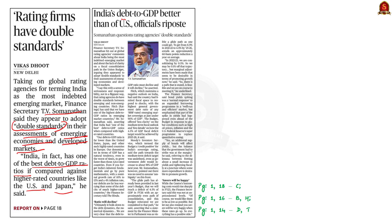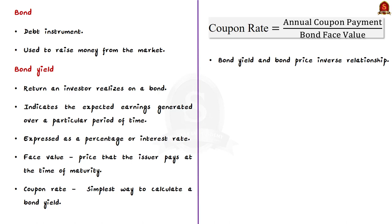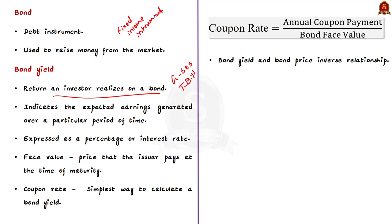A bond is a fixed income instrument that represents a loan made by an investor to a borrower. Bond yield is nothing but a return an investor realizes on the bond. Bonds are also commonly used by governments to raise capital in order to fund domestic growth and development projects. A bond's yield indicates the expected earnings generated over a particular period of time, expressed as a percentage or interest rate.